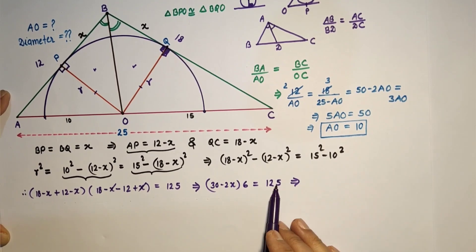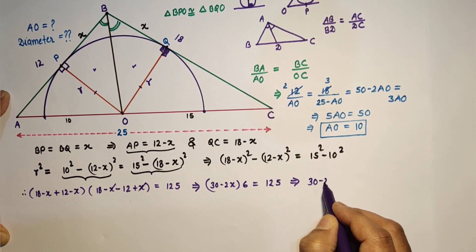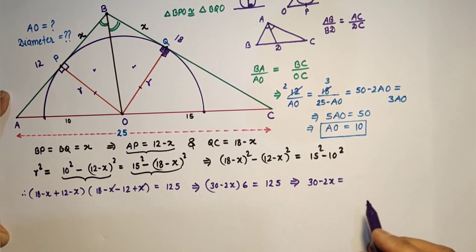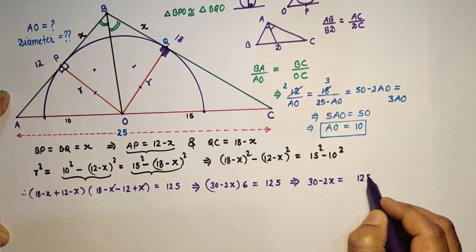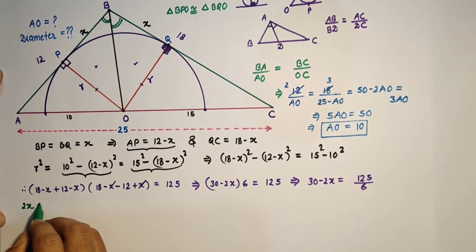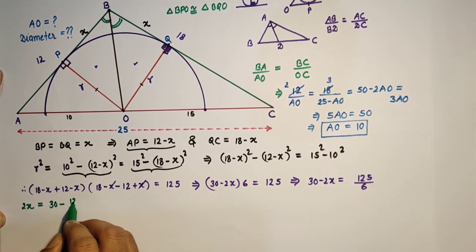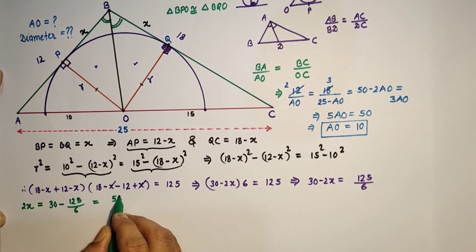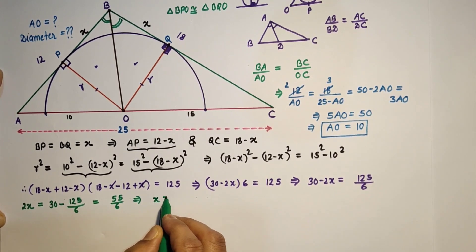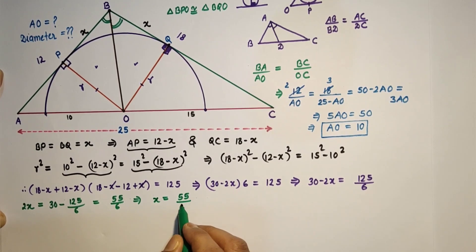That means (30 minus 2X) times 6 is 125. So 2X is equal to 30 minus 125/6, which gives X is equal to 55 by 12.